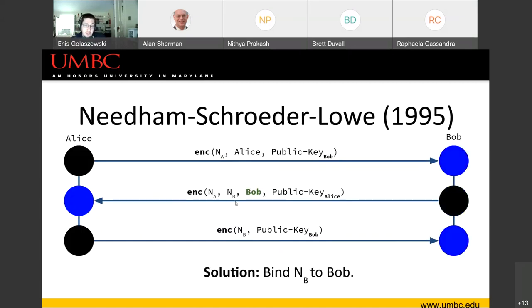The solution is to cryptographically bind NB to Bob. A simple way Lowe proposed in 1995 is to throw Bob's name into this message. If we add pieces of information into a phrase and encrypt that entire phrase together, we're cryptographically binding those things together. This binds NA and NB to the context of Bob responding — Bob is now part of the context, and that eliminates the attack. There's a strong argument that for real-world protocols, you could add a lot more to these messages: what if the two parties are using different versions of the protocol, or these messages are from different sessions?